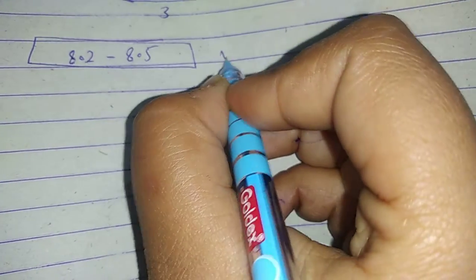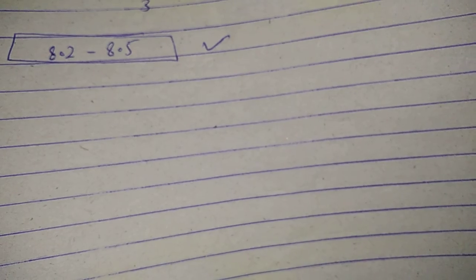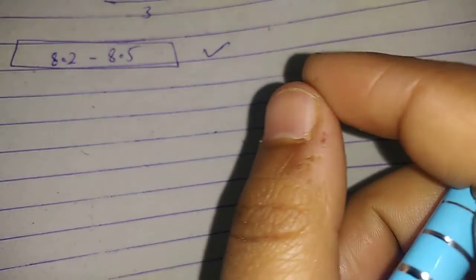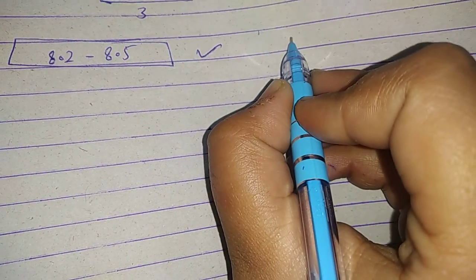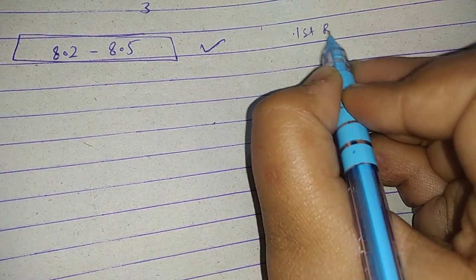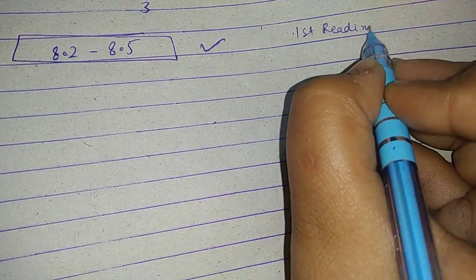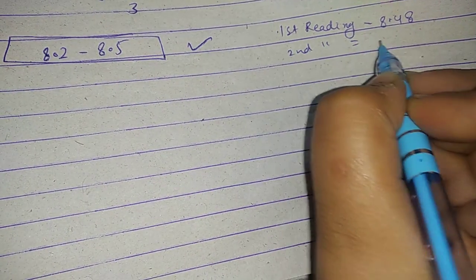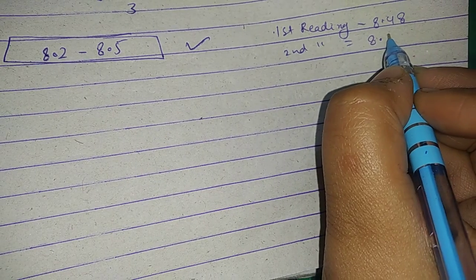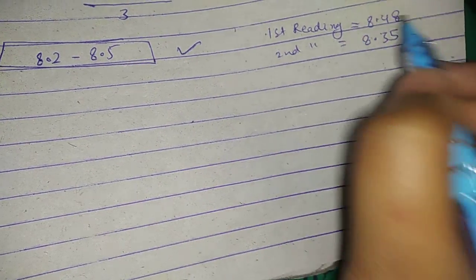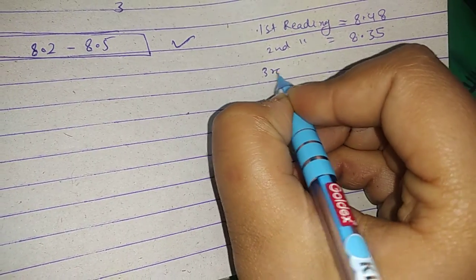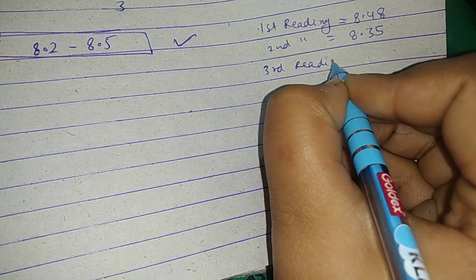If there is a reading then it is normal. If the first 2 pH readings are 8.48 and 8.35, the first reading is 8.48, the second reading is 8.35. This is the reading. Let's tell the third reading value. What is the third reading value?